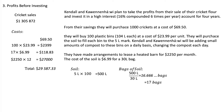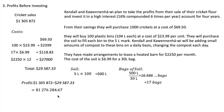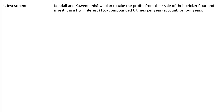The profit is $1,305,872 minus $29,587.33, which gives us $1,276,284.67 in total profit. Step 4: Kendall and Gwena Howie plan to take the profits from their sale of cricket flour and invest it in a high-interest 16 percent account, compounded six times per year, for four years.